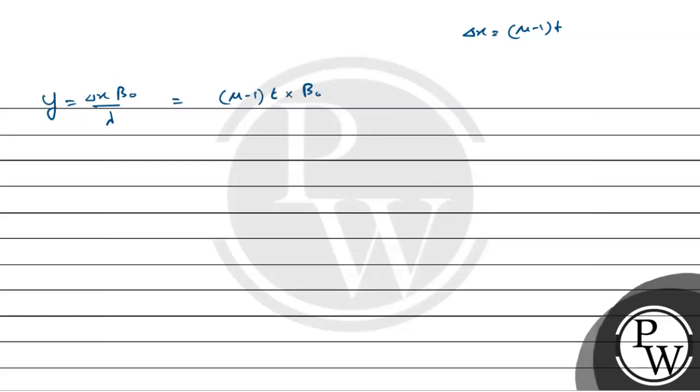So shift in the central fringe equals del x beta naught by lambda. Now del x is what? Del x equals mu minus 1 times t. So this equals mu minus 1 times t into beta naught by lambda. Okay, now we have our value, put correctly.